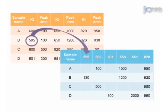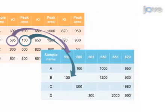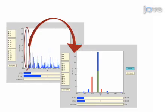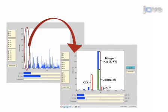Following electronic nose analysis, the data is exported and transformed. The final step of the procedure is to identify KOVATS index windows and consolidate the peaks under a single KOVATS index label using the graphical interface.